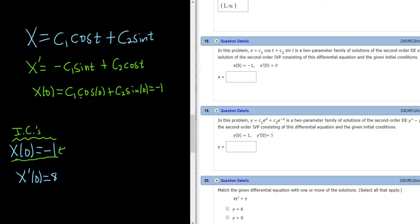So cosine of 0 is 1, so this will be c1. Sine of 0 is 0, so this is c1 plus 0 equals negative 1. How convenient. C1 equals negative 1. So that would be the first value, the value of c1. So now let's use our other condition.